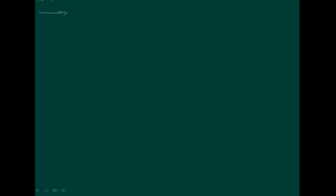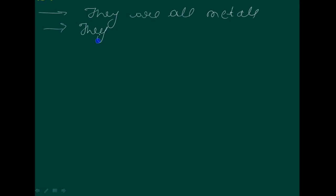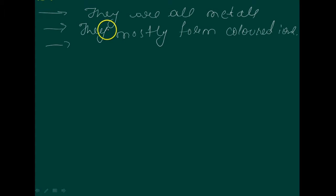They are all metals. They mostly form colored ions. They exhibit variable valence, paramagnetism, and are often used as catalysts.